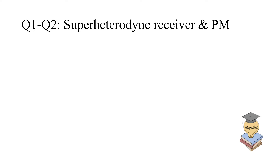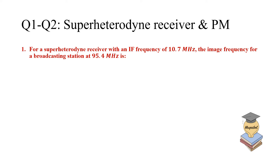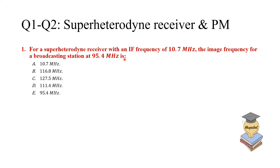For the first two questions, I'll give you both questions and then leave you to answer them. Question one is about the superheterodyne receiver. For a superheterodyne receiver with an IF frequency of 10.7 MHz, what is the image frequency for a broadcast station at 95.4 MHz? Here are a few answer choices — pick the correct answer. You can pause for one minute and then continue.